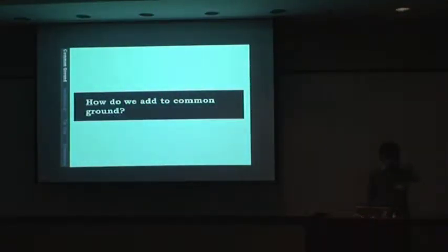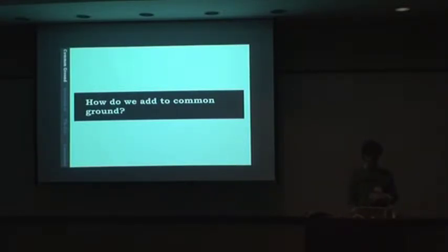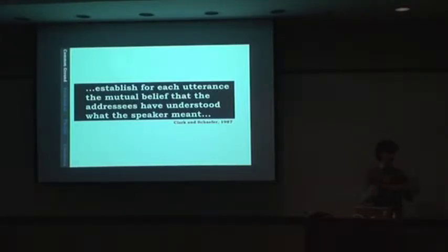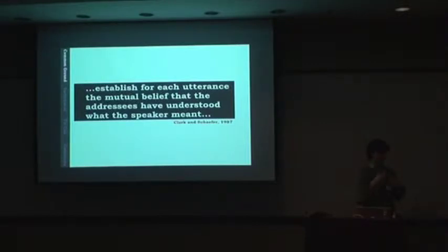The core question we should be concerned about is: how do we add things to common ground? If common ground is this accumulation and foundation that we build other stuff on top of, how do we get stuff in there? Clark suggests that what we have to do is establish, for each utterance, the mutual belief that addressees have understood what the speaker meant. It's not enough that I say something to you and it's not enough for you to have understood it—I need to know that you understood it for us to move on and for it to reach that common ground level.